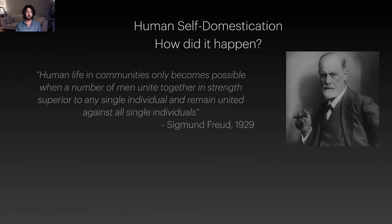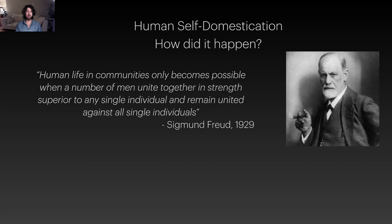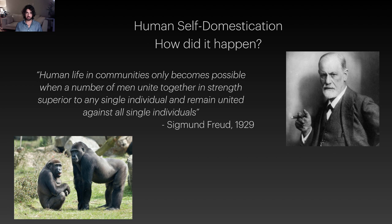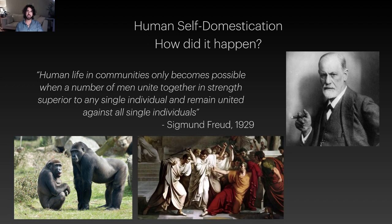So how did all this happen? This is where we get to the quote that started the lecture: 'Human life in communities only becomes possible when a number of men unite together in strength superior to any single individual and remain united against all single individuals.' Look at the gorilla — we separated from our common ancestor with them about 10 million years ago, and you see pronounced sexual dimorphism and pronounced polygyny. The dominant male is always the largest and strongest because that individual can always outcompete any other single male. But for humans, because we can cooperate and band together, even the strongest individual male is no match for the coordinated efforts of other males — as you see in the case of Caesar, overwhelmed by his senators.